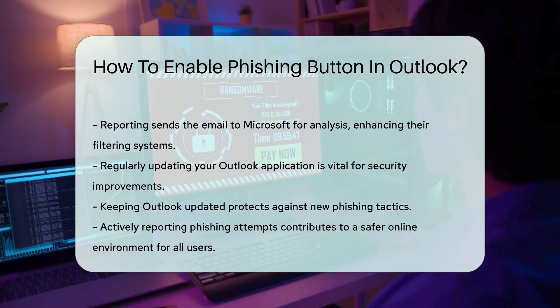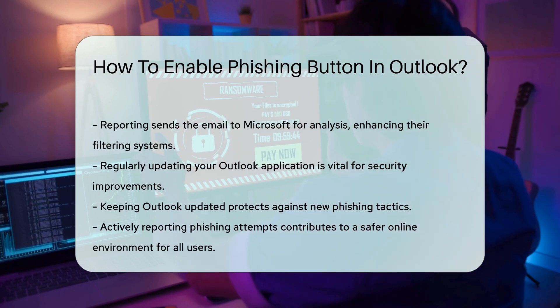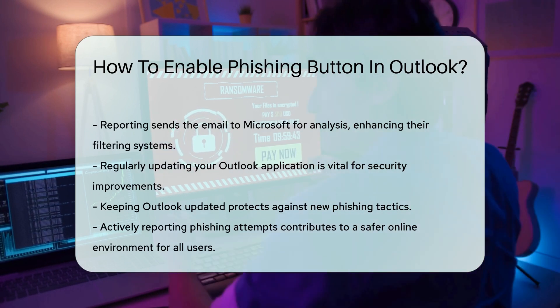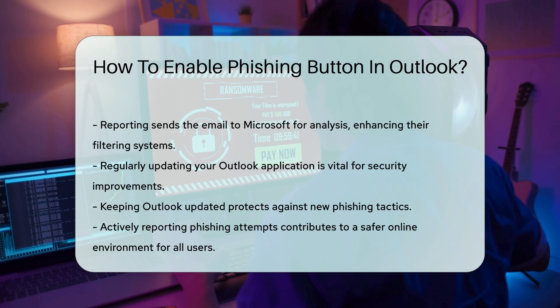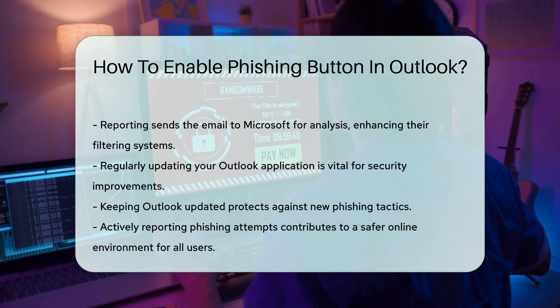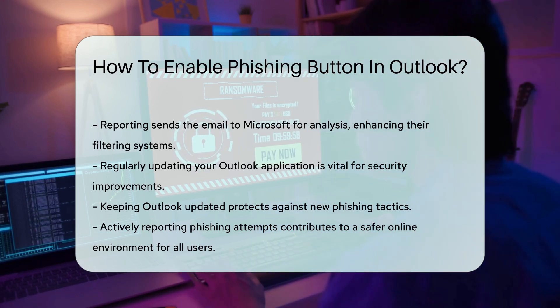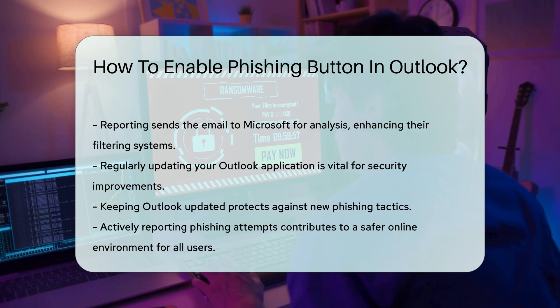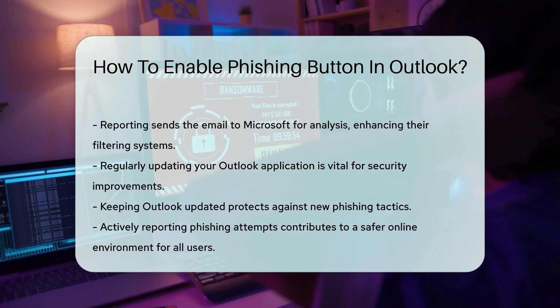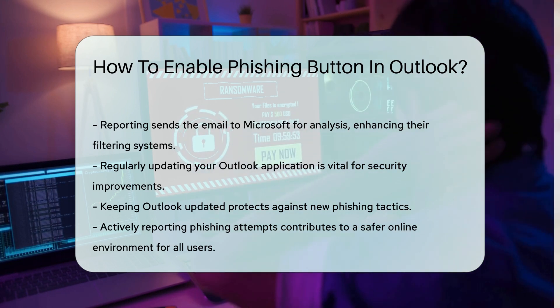In summary, enabling the phishing button in Outlook is a straightforward process that significantly contributes to your email security. By actively reporting phishing attempts, you help create a safer online environment for everyone. Thanks for tuning in to our video. Please like and subscribe and leave a comment below.